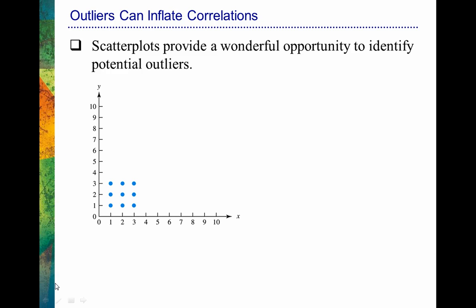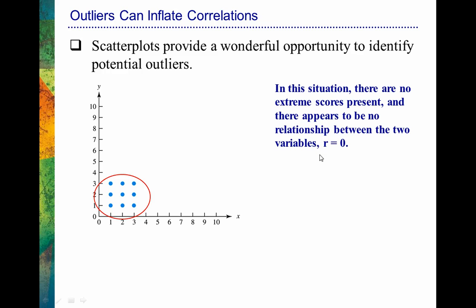First of all, we need to be aware of whether there are outliers in our data. Scatter plots provide us with a nice opportunity to determine if outliers exist. In this situation you can see that all of our data is essentially packed together — we don't have any scores that are extremely different from the rest. We have no outliers, and the sample correlation coefficient we compute would be equal to zero. There's no trend here; I'm not able to see an increase or decrease in the scores, or any type of pattern in the data.